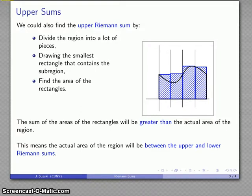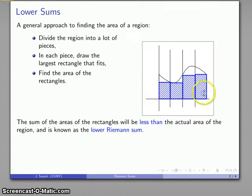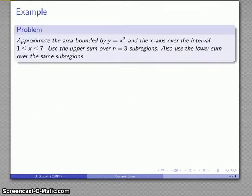Now there's an important qualifier: we have to have a region that actually has an area — that's a topic you'll discuss later in mathematics. For right now, we'll assume we have regions that actually have something we could call an area. In that case, we know the actual area will be someplace between the upper sum, which is a little larger than the region, and the lower sum, which is a little smaller. So let's find a Riemann sum.